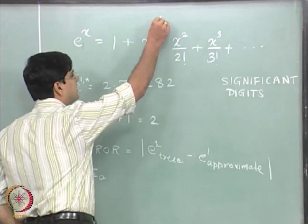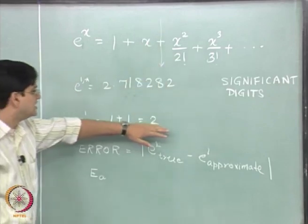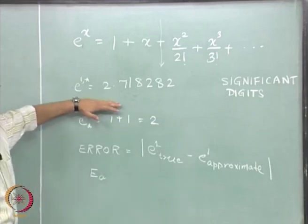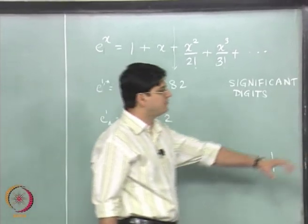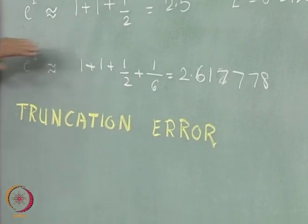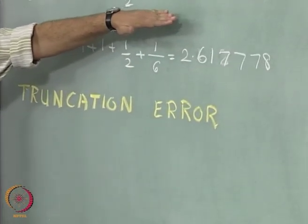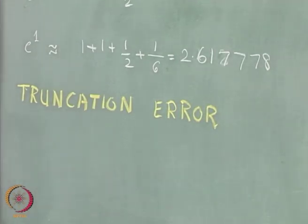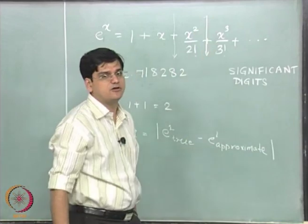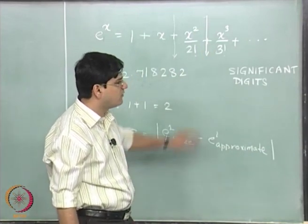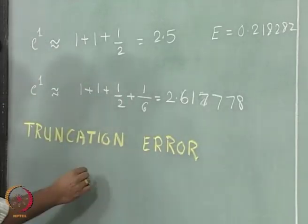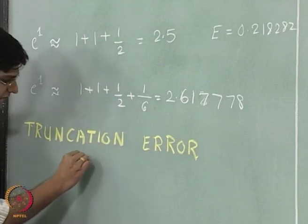The truncation error comes about because we are truncating this infinite series at a certain point. What happens is when we truncate this series at this particular location, the difference between the approximate value of e to the power 1 and the true value of e to the power 1 is arising because we are truncating at the second term. In the second case, this truncation error is dropping. The reason why this truncation error is dropping down is because we have used an additional term in this approximate value of e to the power 1.